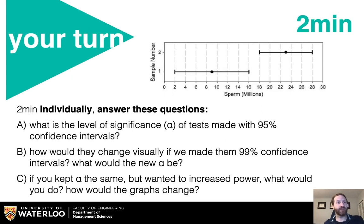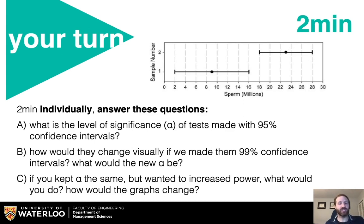Now it's your turn. Individually, answer these questions: What is the level of significance of tests made with a 95% confidence interval? How would they change visually if we made them 99% confidence intervals, and what would the new alpha be? And if you kept alpha the same but wanted to increase power, what would you do and how would the graphs change? Go.